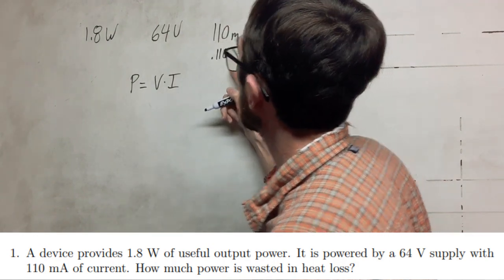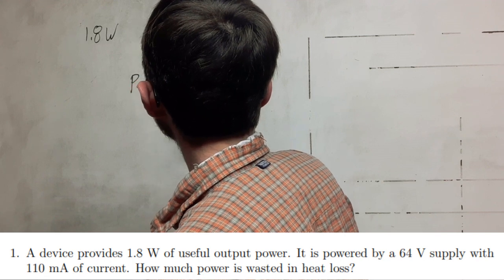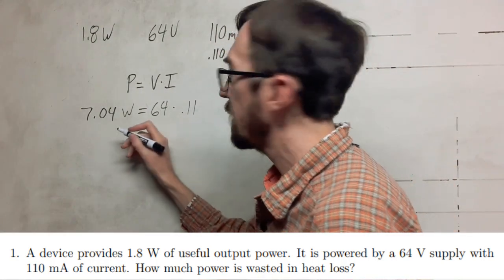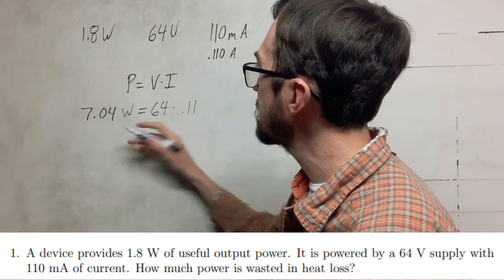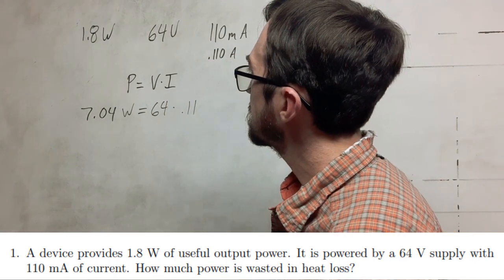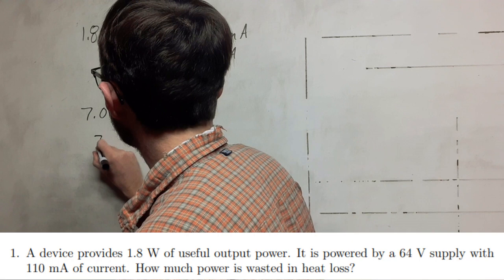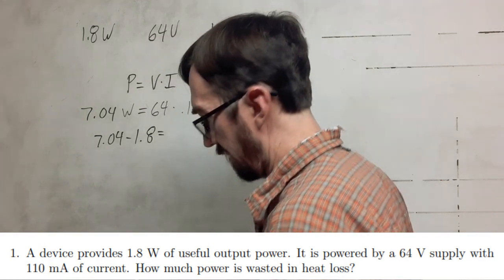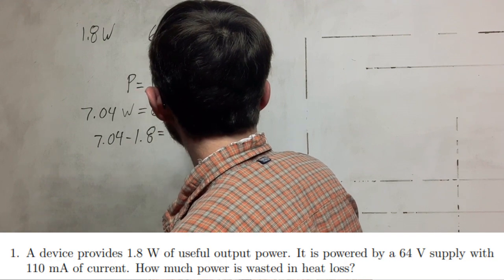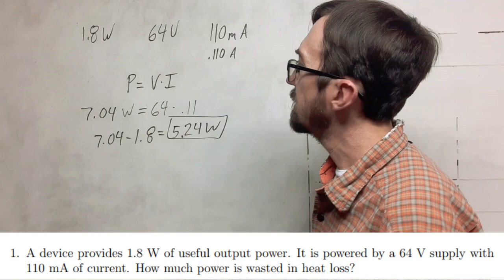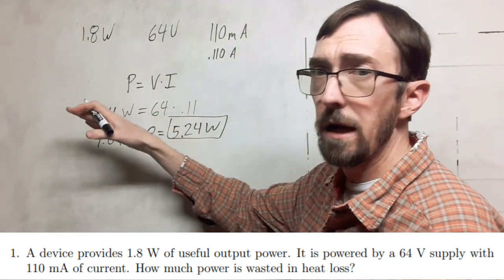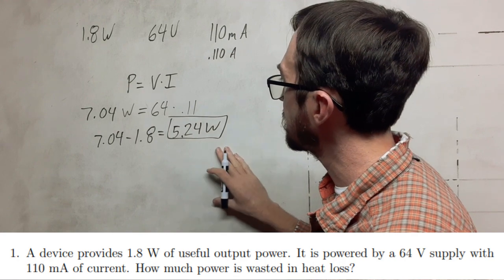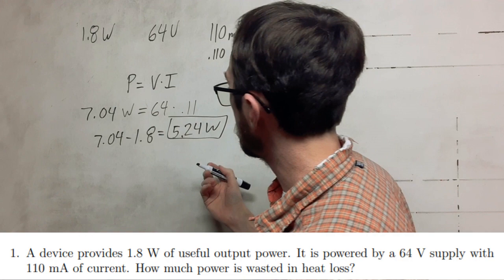We're going to take the voltage and multiply it by the current: 64 times 0.11, which gives us a rating in watts. Multiplying these out, we get 7.04 watts as the power available from this device. Then we take 7.04 and subtract 1.8, which gives us the loss of 5.24 watts lost to the environment. If you need significant figures, you would round this to 5.2 watts.